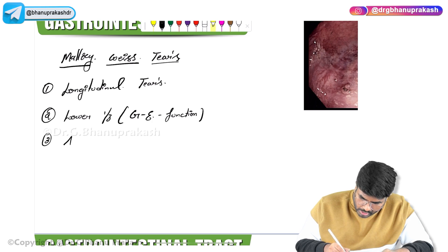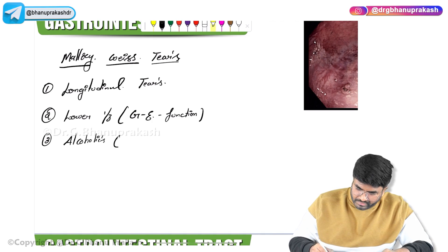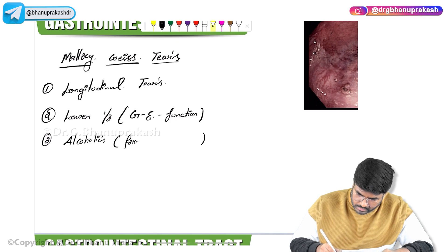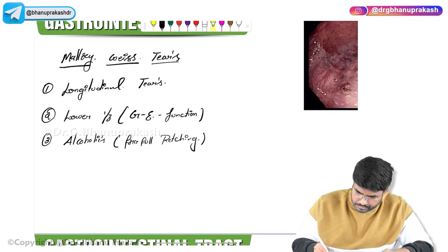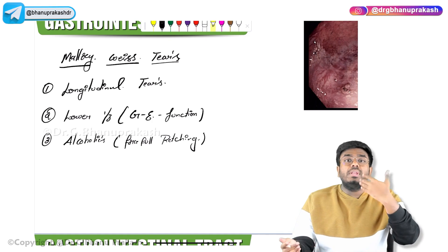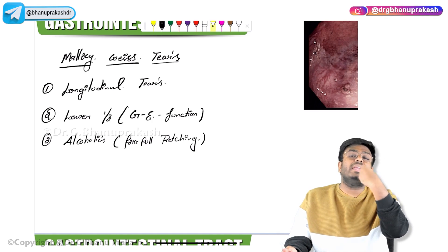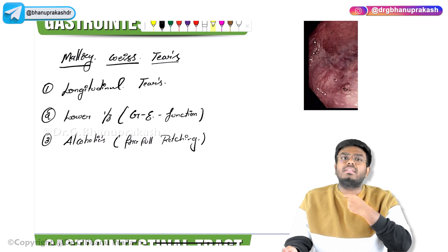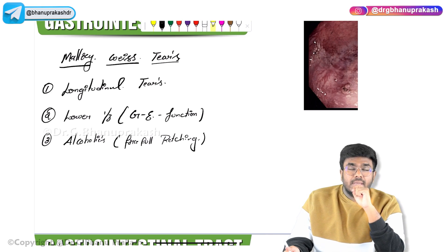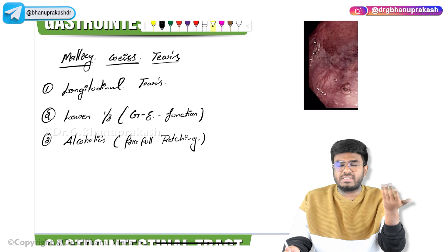These are seen mainly in alcoholics during forceful retching. Whenever they do forceful retching, because of the increase in intra-abdominal pressure, the food particles come out forcefully and cause tears in the lower one-third of the esophagus. This is a milder condition compared to the other one we will discuss later.